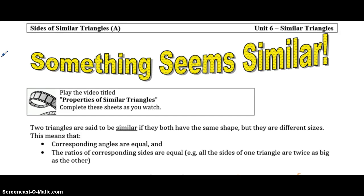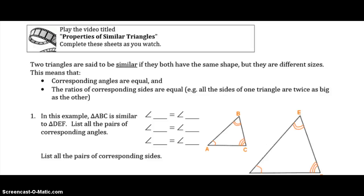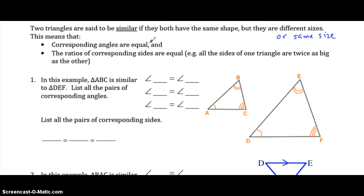Welcome to Something Seems Similar, where we're going to look at the properties of similar triangles. Looking at the properties of similar triangles and proving triangles are similar is very similar to what you did with congruent triangles. Two triangles are said to be similar if they have the same shape but may be different sizes. This means that corresponding angles are equal and the ratio of corresponding sides are equal.